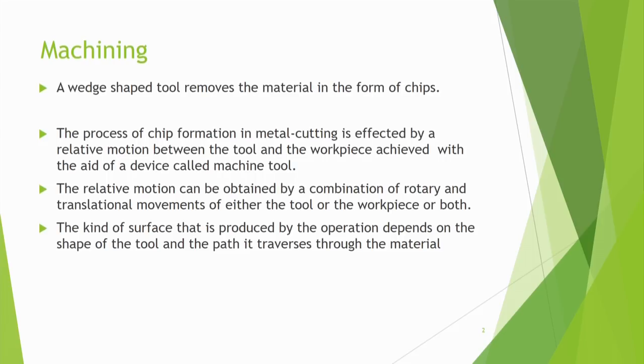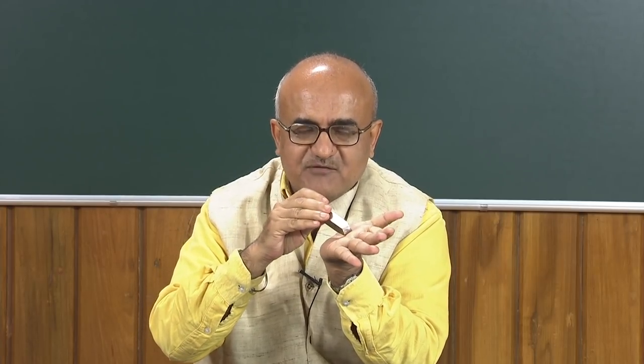The process of chip formation in metal cutting is effected by a relative motion between the tool and the work piece, achieved with the aid of a device called a machine tool. A machine tool is that device which causes removal of the material. For example, lathe is a machine tool, milling machine is a machine tool, grinding is a machine tool. There should be relative motion between the tool and work piece — that is the principle of machining.